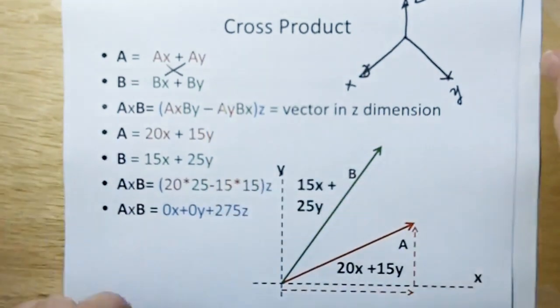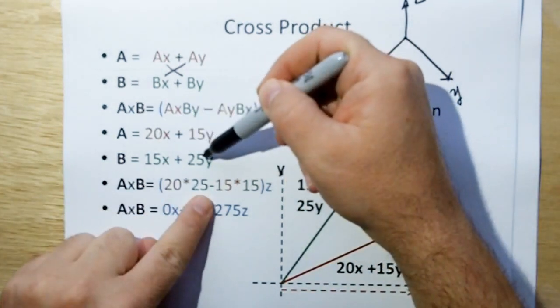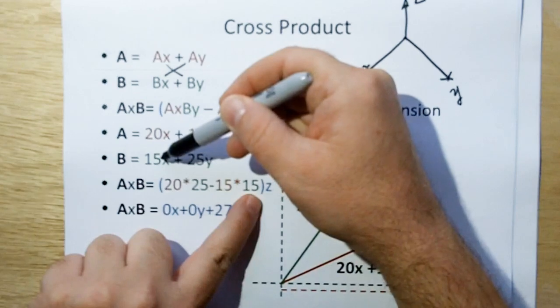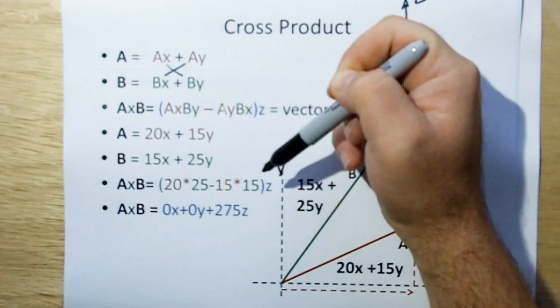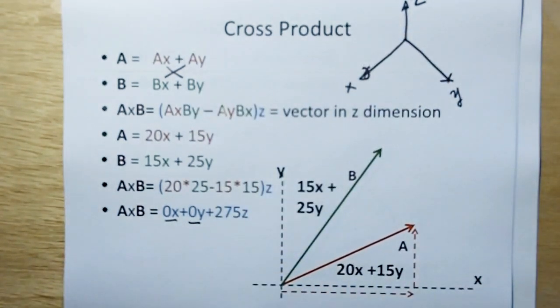Given the example here, 20x times 25y minus 15y times 15x, that gives you Z, and that works out. Writing the full vector, you get 0 for X and Y, but you get 275 for Z.